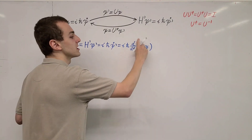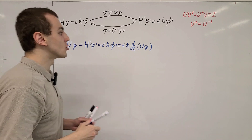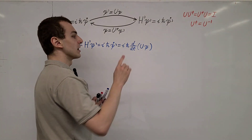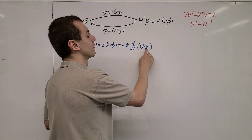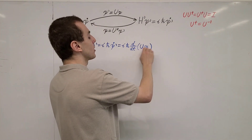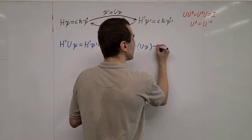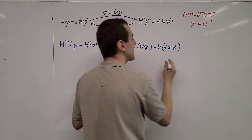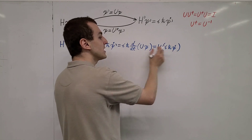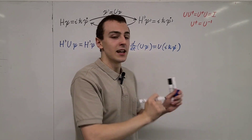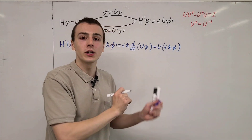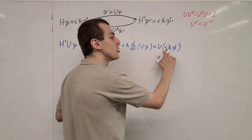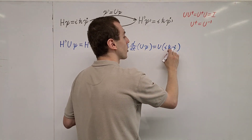U*psi is exactly psi', and the dot notation is shorthand for the time derivative. Now we have the derivative of a product, so we have to use the product rule for differentiation. First, applying the derivative to psi gives psi-dot while U remains unchanged, giving us U times i*h-bar*psi-dot. Constants can be commuted, but operators and states are in general non-commutative, so you have to be careful when swapping their order. h-bar is just a fundamental constant that we can move around.